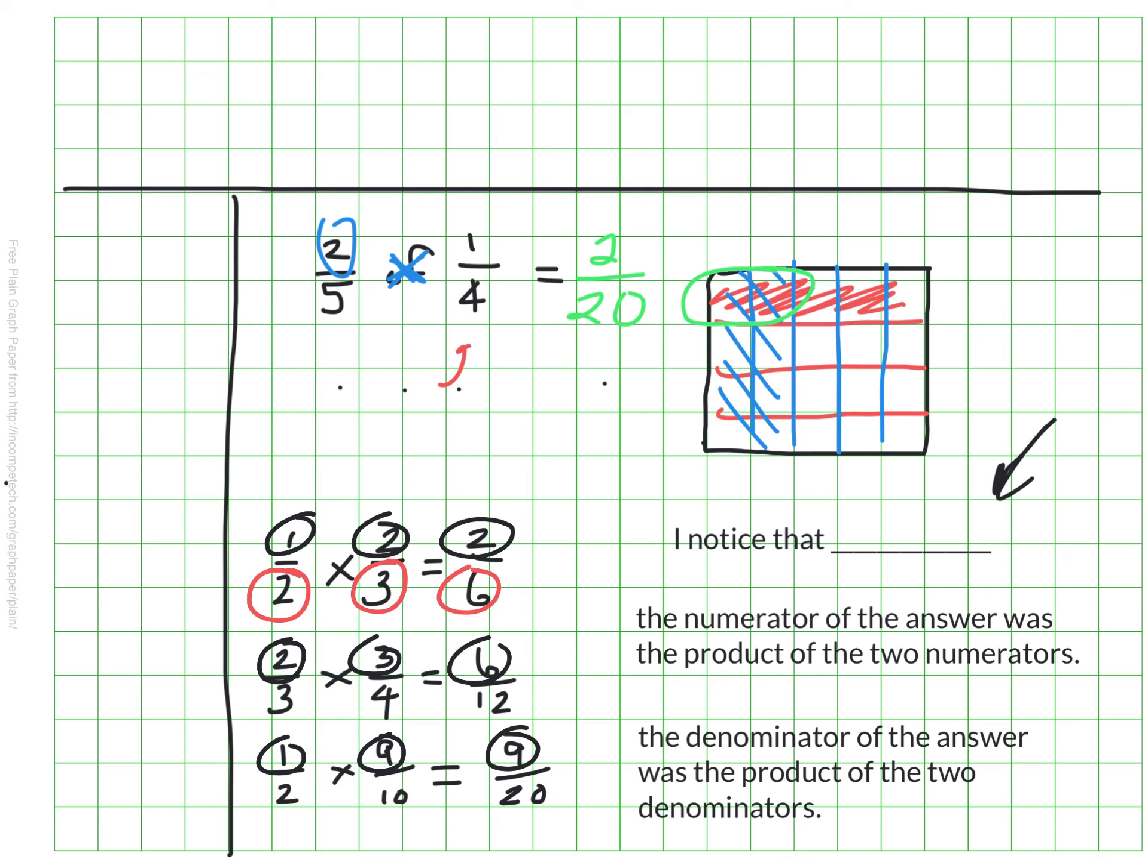I also noticed the denominator in the answer was the product of the two denominators. So two times three is six. Three times four is twelve. And two times ten is twenty. This works every time. This pattern is the algorithm.